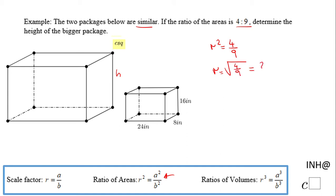For finding r we can take square root and in this case we get 2 over 3, so that means if we go from the large picture to the small picture the scale factor is 2 thirds.